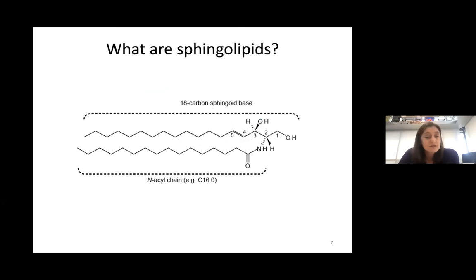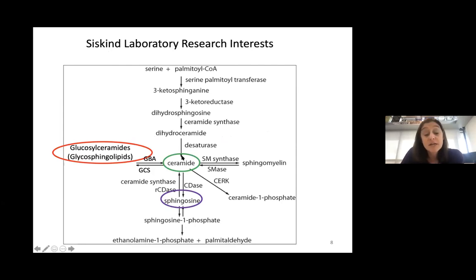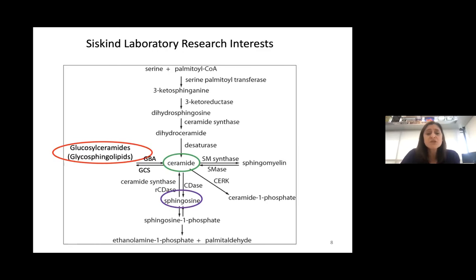With this group I don't need to explain what a sphingolipid is, but I do want to show you the basics of sphingolipid metabolism. What my group was studying at first — and then science pushes you in the direction of the data — was: what is the role of ceramide in driving cisplatin-induced kidney injury, and what is the role of the ceramide metabolites in those processes?